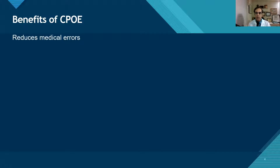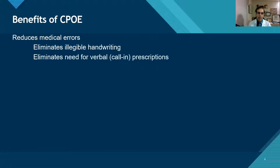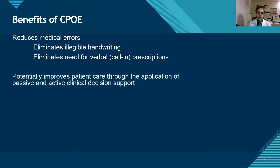So why do we want to do electronic prescribing? Number one, it reduces medical errors. With prescriptions or medication orders, it eliminates the issues with illegible handwriting and also eliminates the need to call in verbal prescriptions or orders over the phone, like we used to do in the old days.